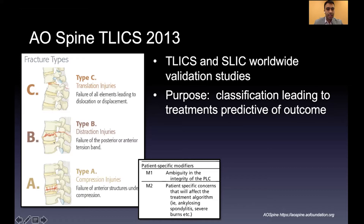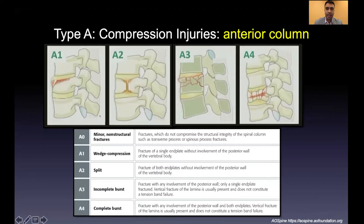It's good practice to use AO Spine classifications when describing injuries to attendings — for example, calling something an AO Spine Type A3 or B2. They appreciate that because it shows you took the time to review the images and understand what you're dealing with.